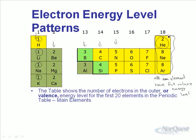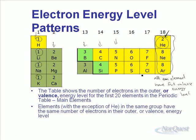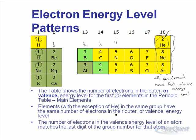Even though helium only has 2 electrons, its only energy level is the first one, and the first energy level can only have 2 electrons anyway, so its valence energy level is still full. The number of electrons in the valence energy level is the same within each group. If the group number is less than 10, then the group number equals the number of valence electrons. For numbers greater than 10, the last digit tells us how many electrons are in that valence energy level.